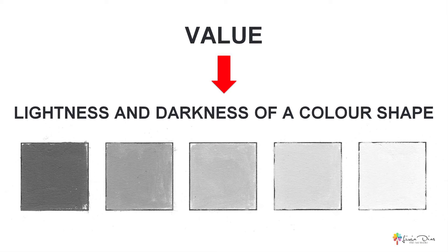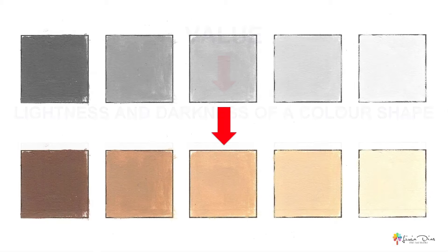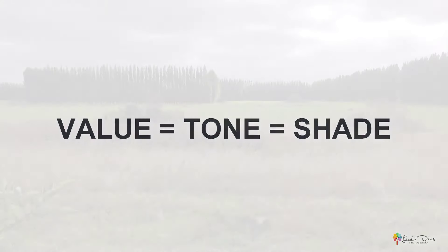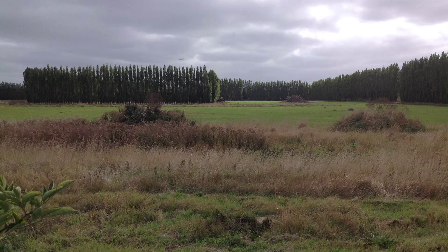Firstly, let's talk about how value happens. Some parts of this tutorial are excerpts from my online course Value and Value Relationships in Landscape. Value is about the lightness and darkness of a color shape within a drawing or a painting. It's also called tone or shade. Let's understand how value happens.